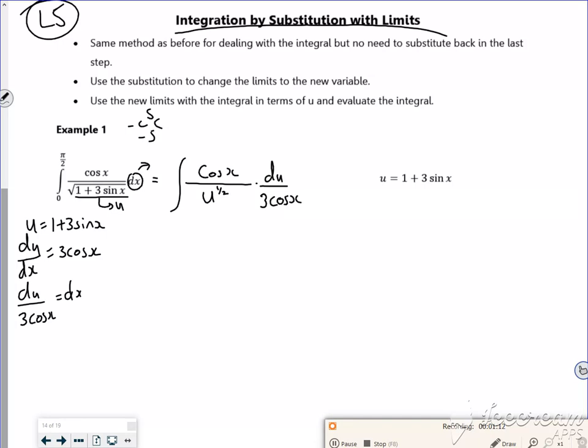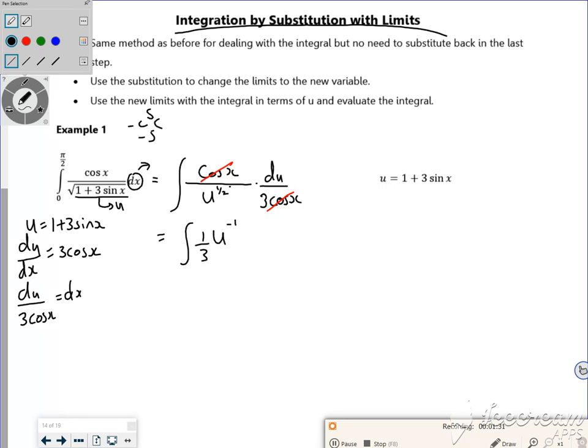If you remember what I say to you, take a step back and just check to see if anything will cancel out. So the cos x's will cancel out, and I'm left with an integral of a third if I bring the three to the front, u to the minus a half du.